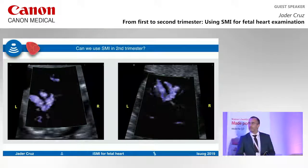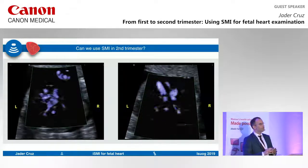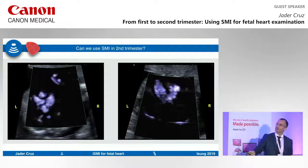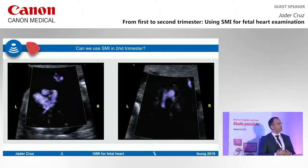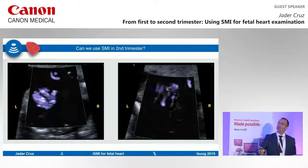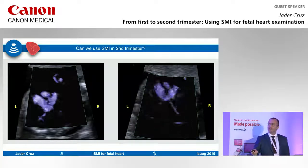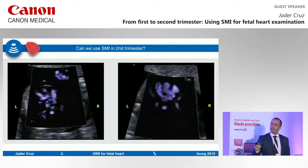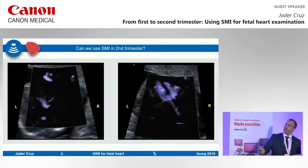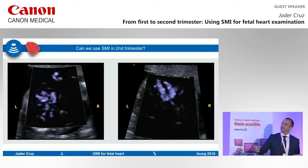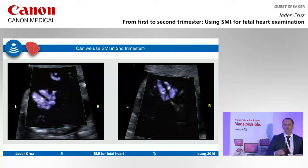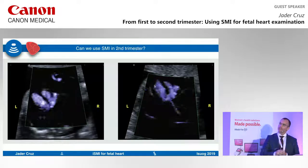What about the second trimester? In the past there was a limitation because SMI required a very small Doppler window — the color box. But with the new iSMI, the ability to assess a larger area improves. Although we're still working on some presets, visualization of the heart in the second trimester has improved a lot. The two examples shown are both 20-week babies. It works well at 20 weeks and also at 21 to 22 weeks, but from 23 weeks onwards you need a smaller box again.